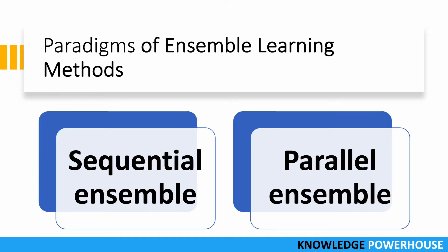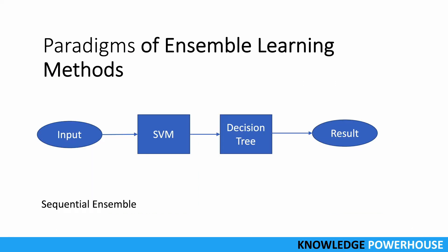There are two primary paradigms of ensemble learning: sequential and parallel. In sequential ensemble, you have an input dataset and give it to a model like SVM for classification. Whatever result you get from SVM, you give it to a decision tree. It's a sequence where the output of one model becomes the input of the next model. This is the sequential paradigm.